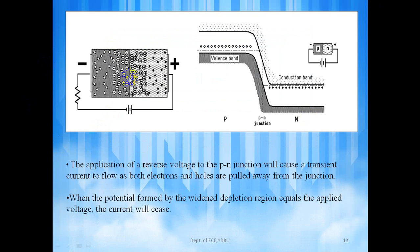The application of a reverse voltage to the PN junction will cause a transient current to flow as both electrons and holes are pulled away from the junction. When the potential formed by the widened depletion region equals applied voltage, the current will cease to flow.